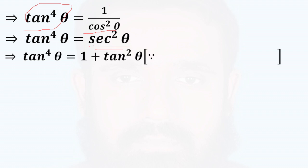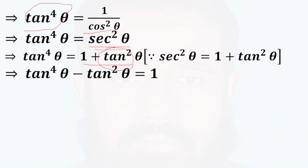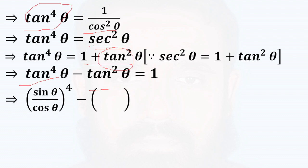1 plus tan squared theta. Sec squared theta equals 1 plus tan squared theta. Tan to the power 4 minus tan squared equal to 1. Tan equal to sin by cos.